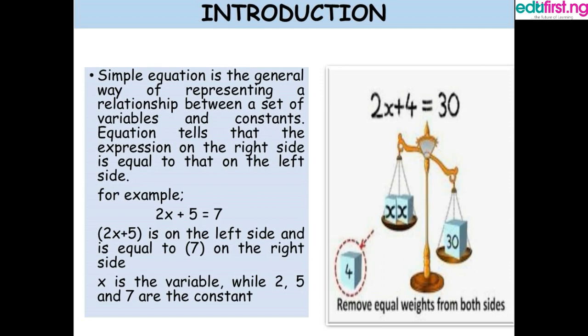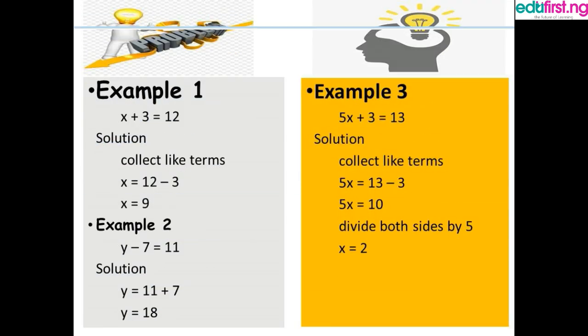For example, 2x plus 5 equals 7. Here 2x plus 5 is on the left side and it is equal to 7 on the right side. x is a variable, while 5 and 7 are constants. Let's look at some examples. Example 1: x plus 3 equals 12, and we want to solve for x.